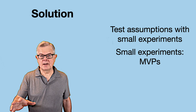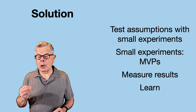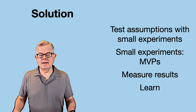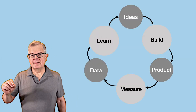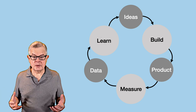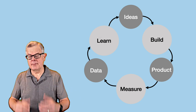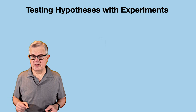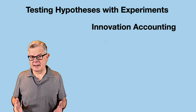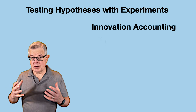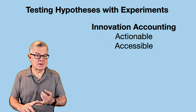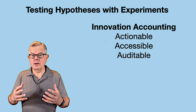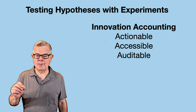He called those small experiments MVPs — minimum viable products. The idea is to put the MVP out there, measure the results in terms of actual customer behavior, learn from that, and then iterate to the next set of assumptions. Eric calls his approach innovation accounting, where you're doing experiments that get results that are actionable, accessible — meaning clearly understandable — and auditable, so you can verify you're actually measuring what maps back to your business assumption.